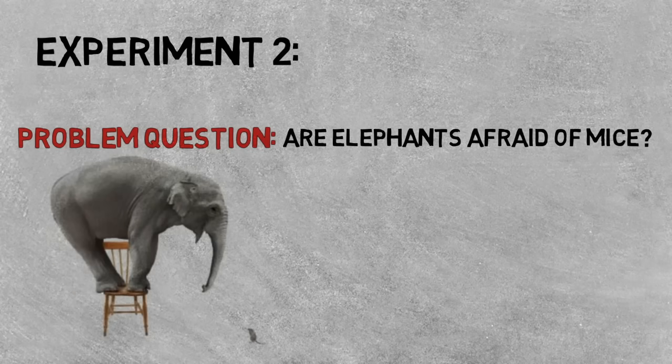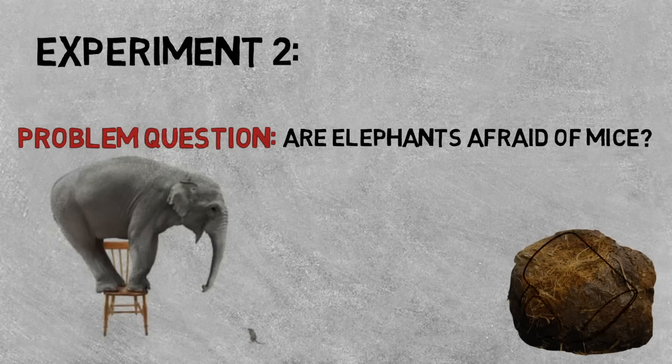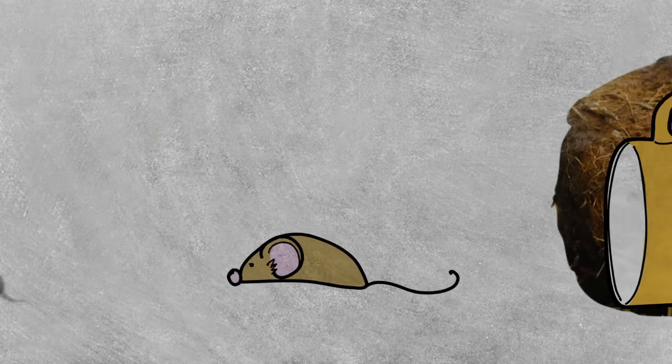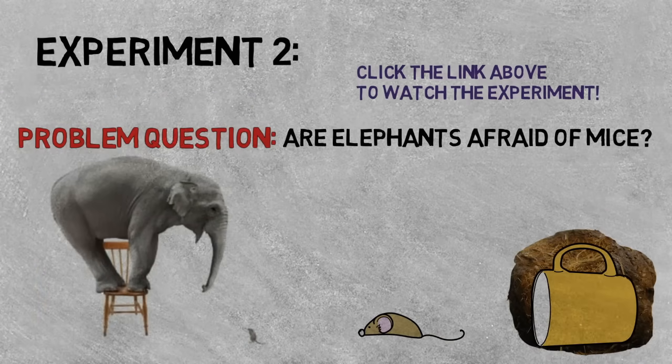So the MythBusters set up an experiment where a mouse was placed under a cup of elephant dung. When an elephant walks by, the dung is tipped over and the mouse is set free. They repeated their experiment with a no-mouse dung control that was tipped over when the elephants walked by as well.